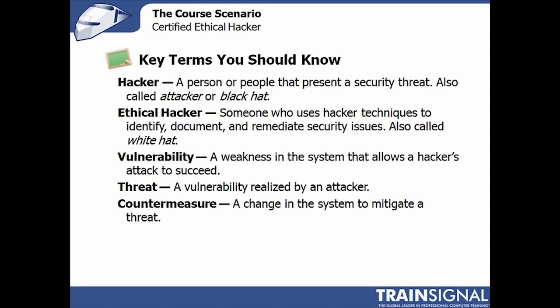Vulnerabilities don't always have to be technology-based. A lot of times it's a process-based vulnerability — for example, approving a system for implementation or approving an employee's access to a sensitive system. And people-based vulnerabilities, like hiring someone who works for a competitor or hiring someone without the proper background check, are another type of vulnerability.